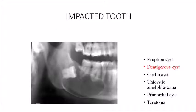Some lesions associated with an impacted tooth include eruption cyst, dentigerous cyst, Gorlin cyst, unicystic ameloblastoma, primordial cyst, and teratoma. Most commonly, the dentigerous cyst is associated with an impacted tooth.